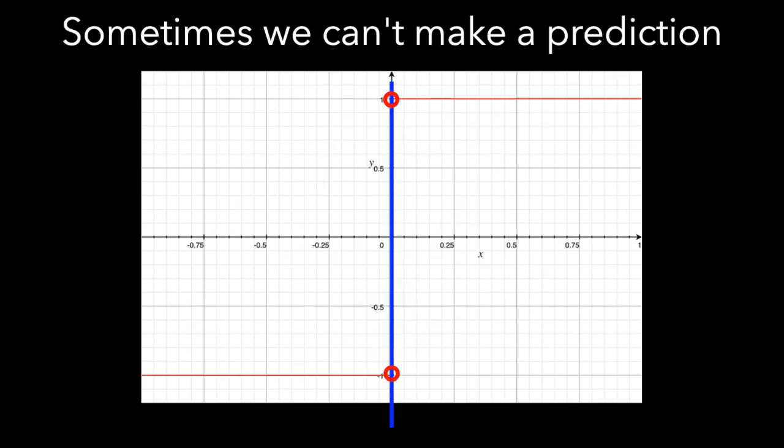On the other hand we could have a case like this where from the right f of x is approaching one value and from the left it's approaching a different value. If the limit from the left doesn't equal the limit from the right, there's no way we can make a prediction and say here's what we think f of x will be at x equals that value.